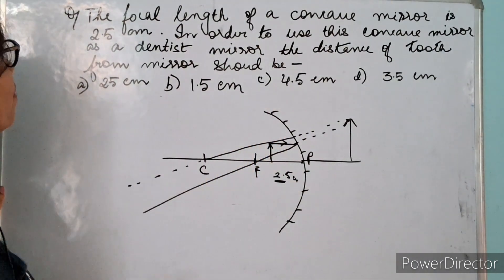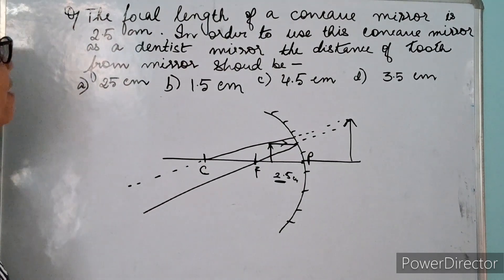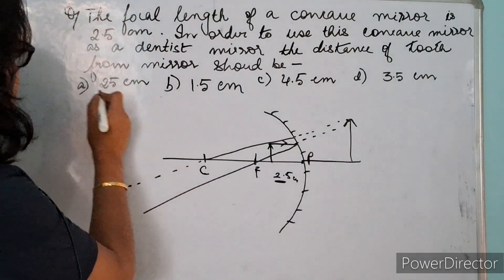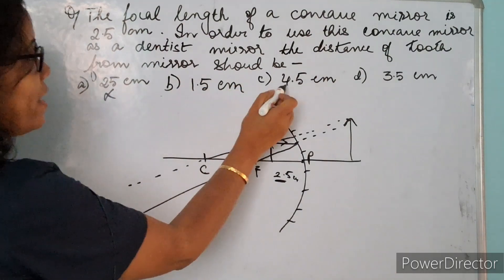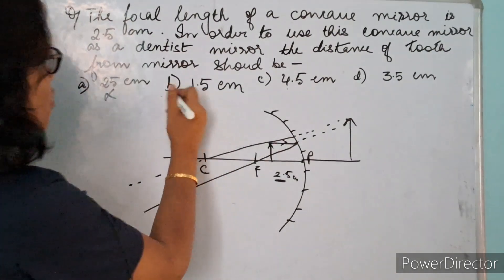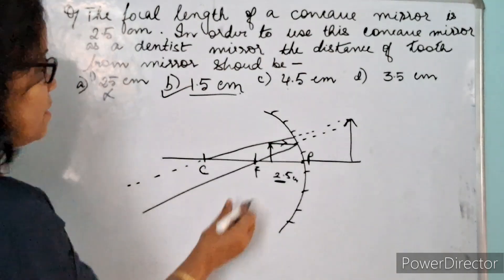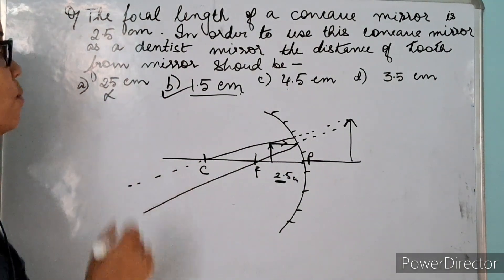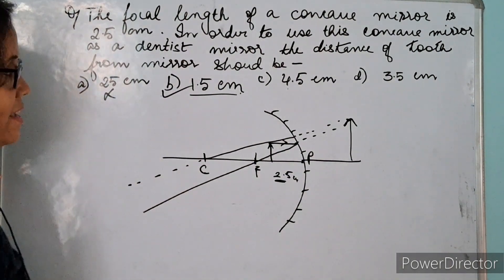Any number which is less than 2.5 centimeter will be the right answer. So 25 is not correct, neither 4.5 nor 3.5, but 1.5 centimeter is less than 2.5 centimeter. That is why 1.5 centimeter will be the right answer.